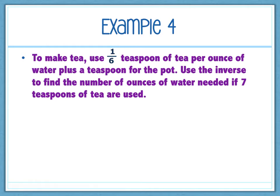Last one. So first thing we have to do is actually set up the equation. This says, to make tea, use one-sixth teaspoon of tea per ounce of water plus a teaspoon for the pot. Use the inverse to find the number of ounces of water needed if seven teaspoons of tea are used. So we have to use the first pieces of information to actually set up an equation. So if we're doing one-sixth teaspoon per, God bless you, per ounce of water plus one teaspoon of water for the pot, then I would have to do one-sixth per ounce of water. So we could say it's W. You could use whatever variable you want there. Plus one teaspoon that you would add into the pot. So this is going to equal my tea.